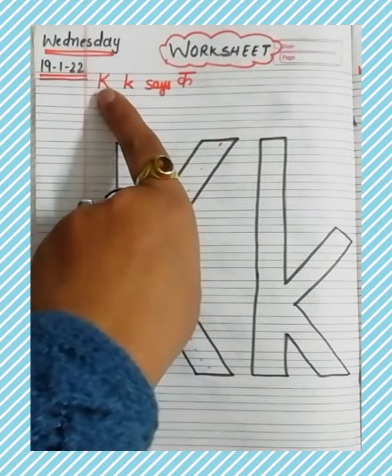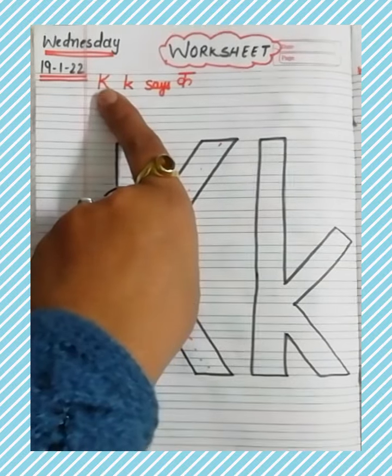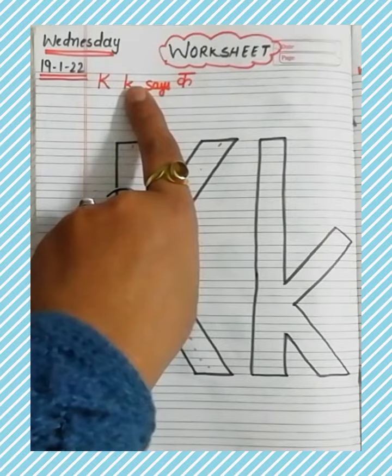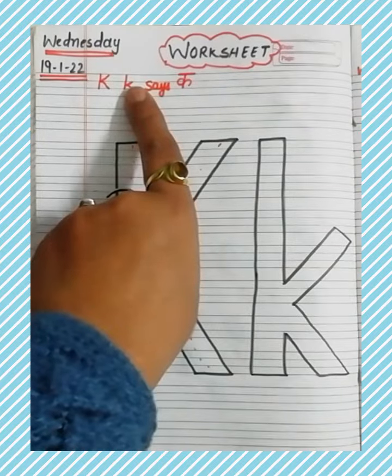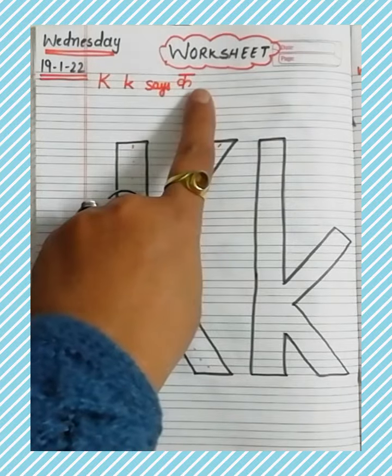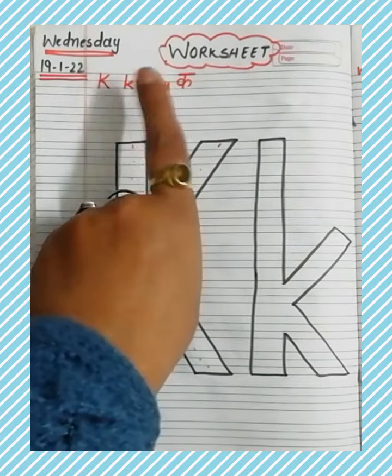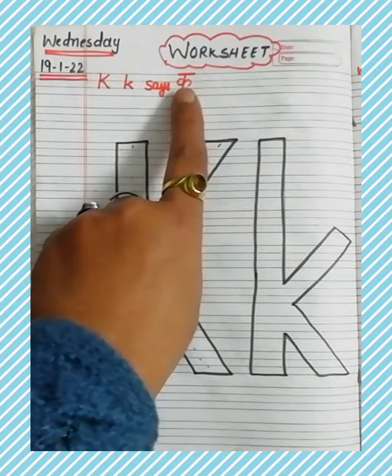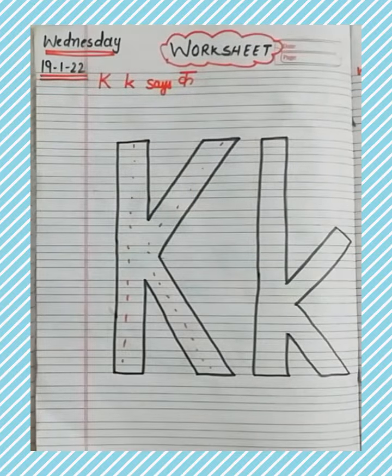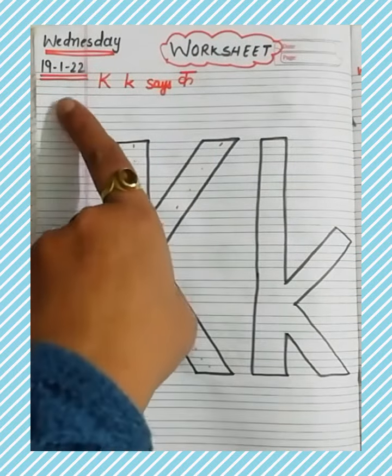Speak with me: This is a capital K and this is a small K. K says K. Student, first of all you write the date.